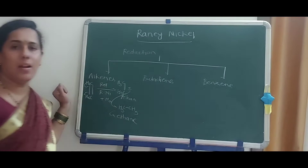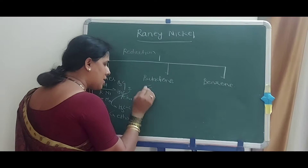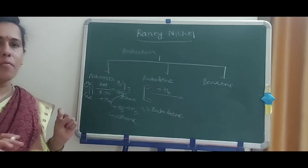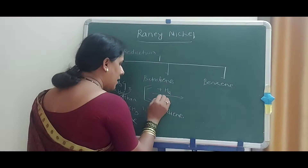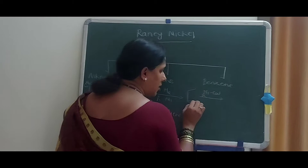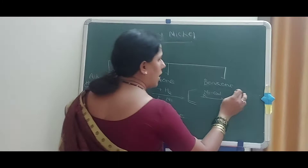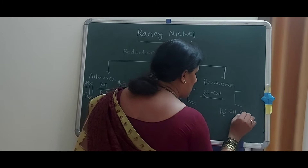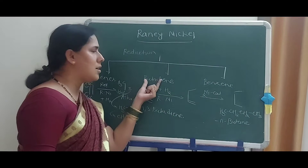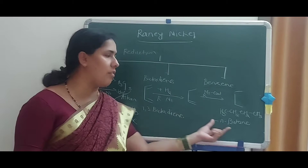Considering the second example, that is 1,3-butadiene. In each step, Raney Nickel reduces one double bond at a time. So 1,3-butadiene loses both double bonds step by step, giving CH3–CH2–CH2–CH3, that is normal butane. Thus the flattening of two double bonds and formation of an alkane takes place.